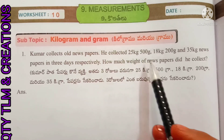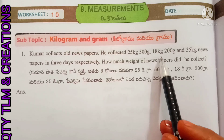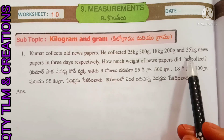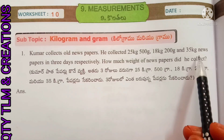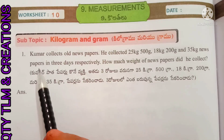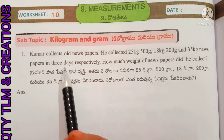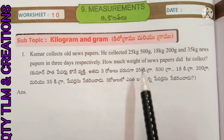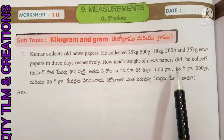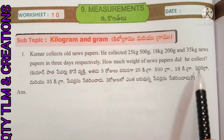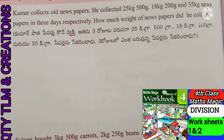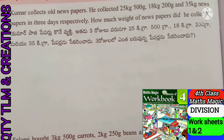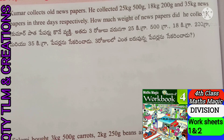First question: Kumar collects old newspapers. He collected 25 kilograms 500 grams, 18 kilograms 200 grams, and 35 kilograms of newspapers in three days respectively. How much weight of newspapers did he collect? Kumar collected newspapers on the first day.